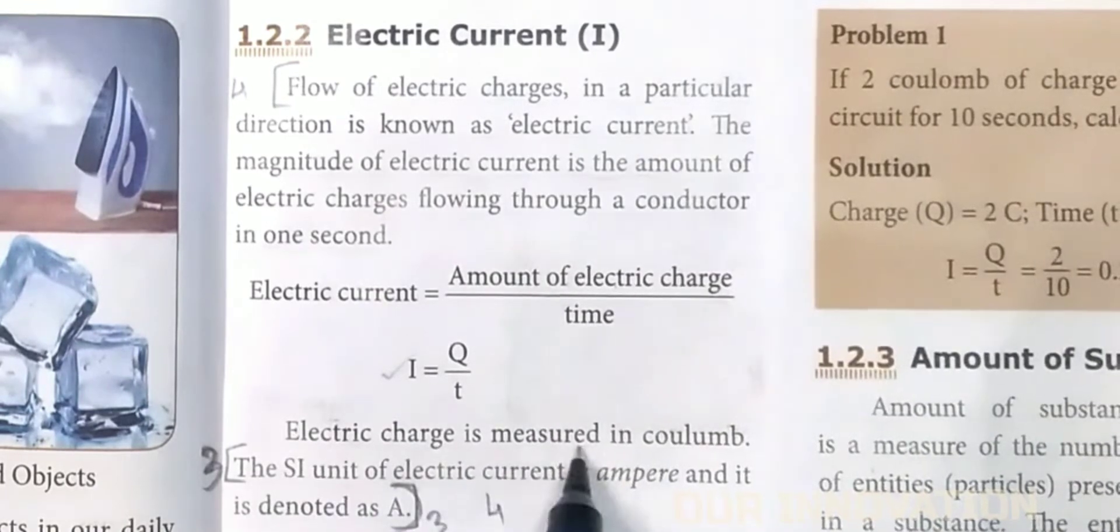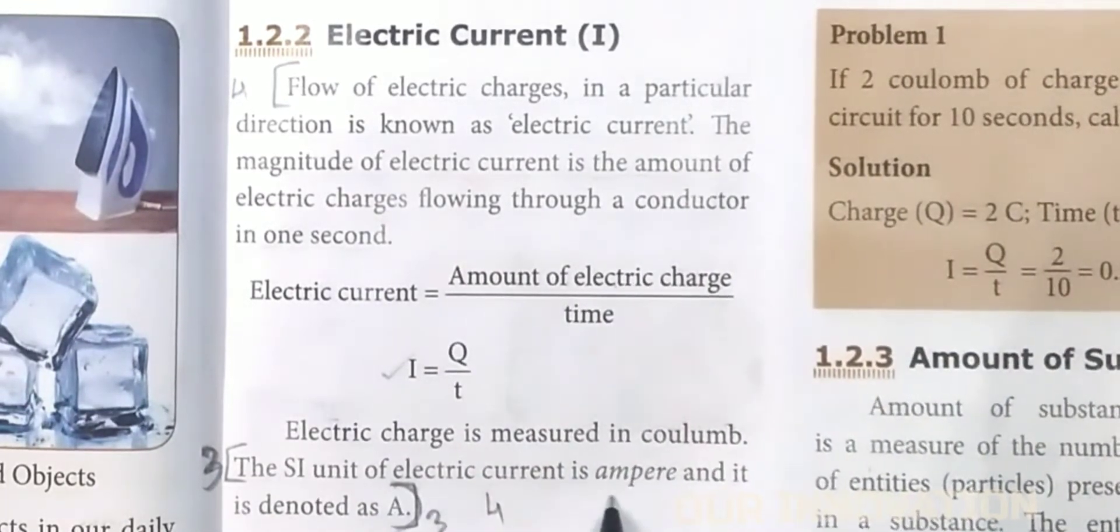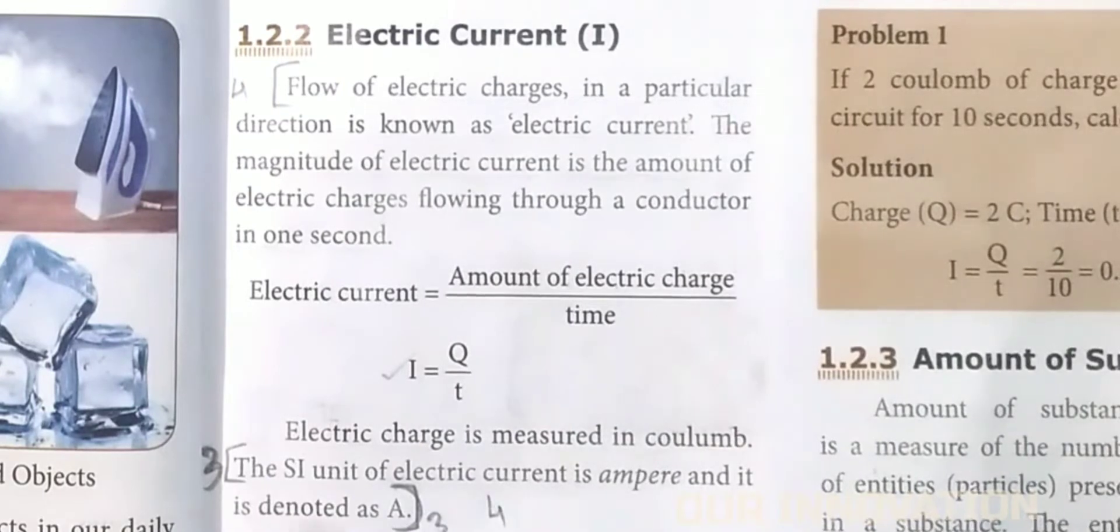Electric charge is measured in Coulomb. The SI unit of electric current is ampere and it is denoted as A. We have to mark up to here.